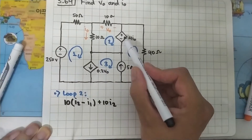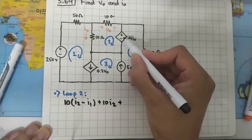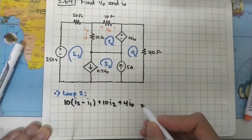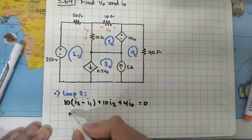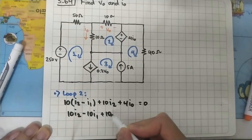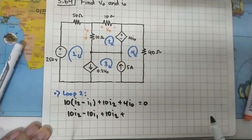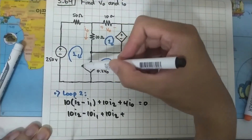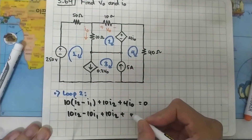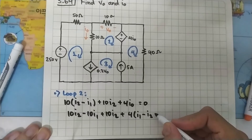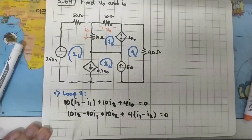Now we move on to this voltage source. It's flowing from positive to negative, so the sign will be positive and the value is 4·I0, and that equals zero. Now I0 is at the same direction as I1 but in the opposite direction of I2, so we have plus 4·(I1 minus I2).